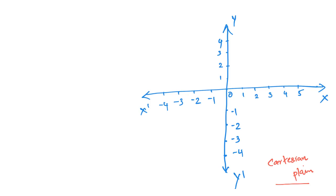Okay, let's take some function. Let's take y equal to x plus 2. We plot this on the Cartesian plane. This function means x takes different values, and then we can get y values. y equal to x plus 2 — it is a linear equation, it is a straight line equation, and then we can draw a straight line.